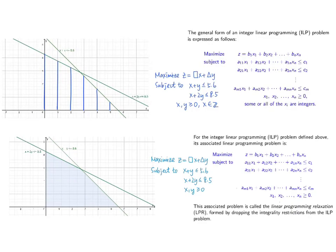Next, we have a mixed integer programming problem with the same setting as before, except that we only restrict x to be an integer. After we have drawn the inequalities on the graph, we will only consider points which satisfy these inequalities and at the same time the x coordinates are non-negative integers. The blue line segments highlighted in the graph show all the points that satisfy these conditions. Removing the restriction that x is an integer gives the LP relaxation, and the shaded part represents the feasible set of the LP relaxation.